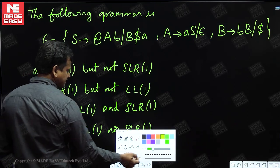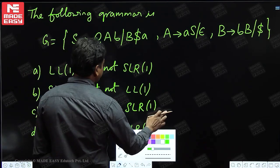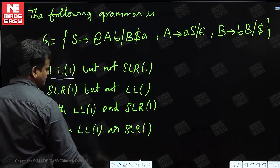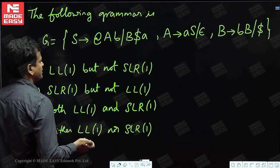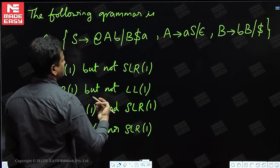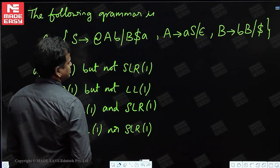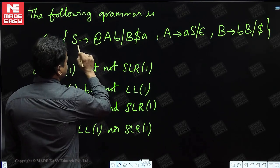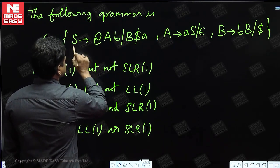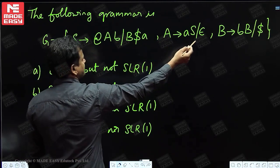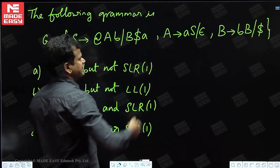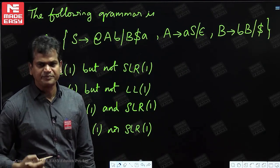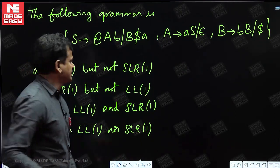I am going for LL(1) first. S, A, and B are the non-terminals; the remaining symbols are terminals. What is the first of the S productions? S derives at-the-rate AB, and S derives B dollar A.